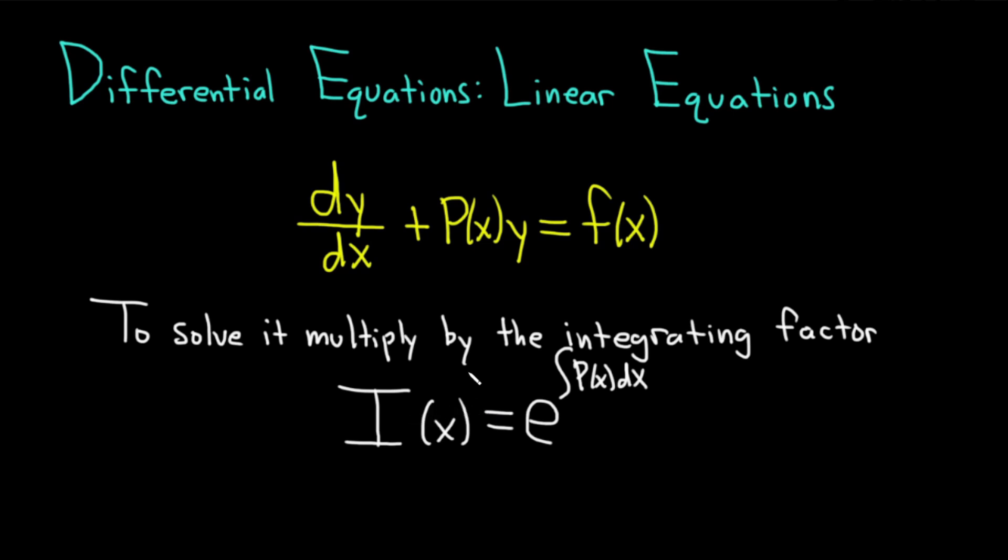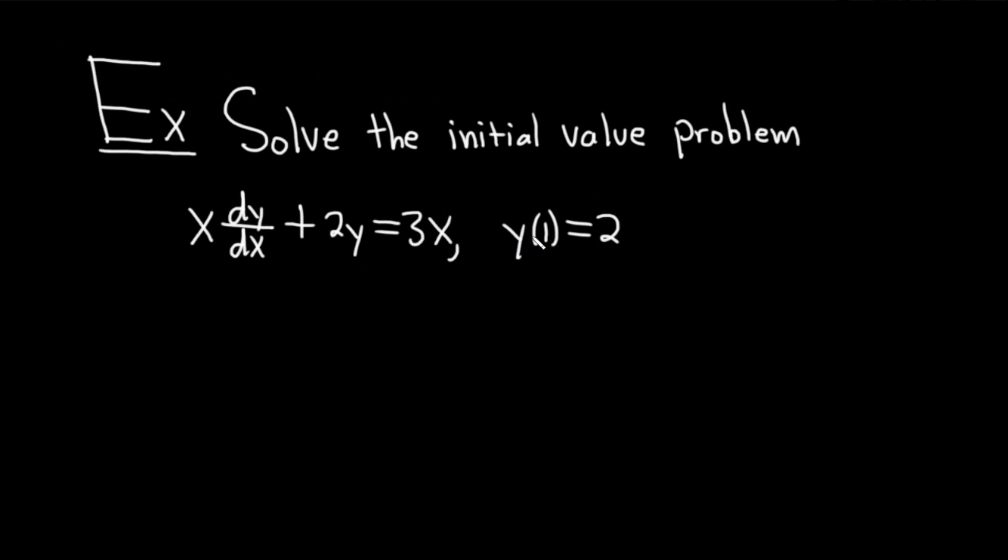Let's go ahead and do an example right away. Solve the initial value problem: x(dy/dx) + 2y = 3x, with y(1) = 2. Whenever you have an initial condition and a differential equation, you have what's called an initial value problem. We're going to solve this differential equation and at the end, we're going to use our condition y(1) = 2 to find the value of c. Let's carefully work through this solution.